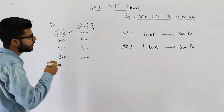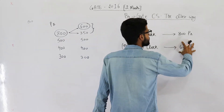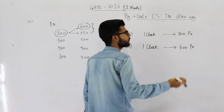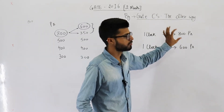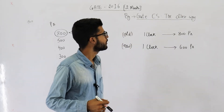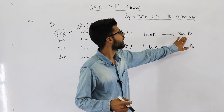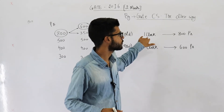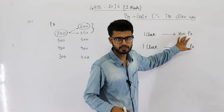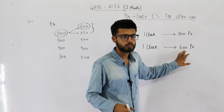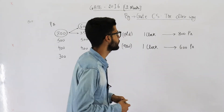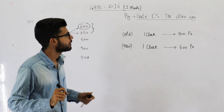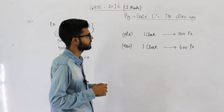Now we need to make these times equal to compare throughput. We can convert both to a common time unit — either convert to 1 second to find how many clocks are generated per second, or take the easier approach and find the LCM of 800 and 600.